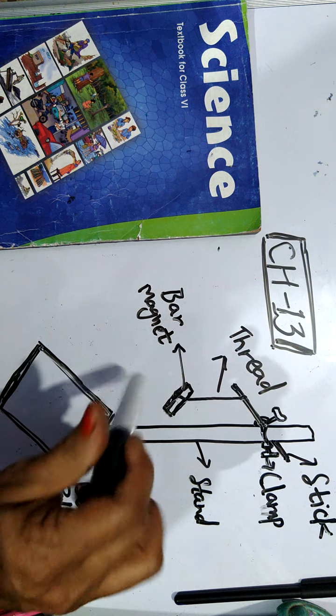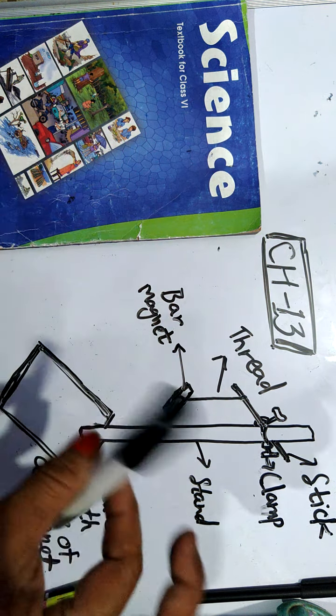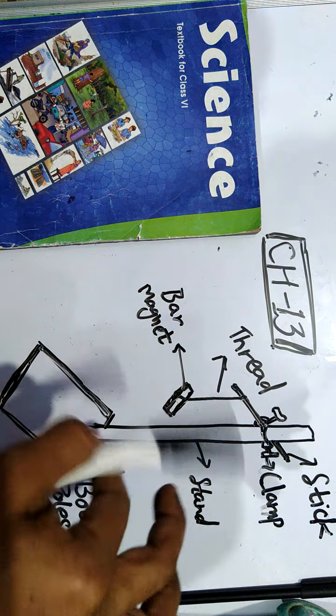Now you just move this bar magnet — just shake it. If you shake the bar magnet it will try to move back and forth. After moving for some time, when you leave it undisturbed, it will come to rest in a definite direction. One end of the magnet will point towards one direction and the other end will point towards the opposite direction. And again and again whenever you move this bar magnet and leave it, it will always come to rest in the same direction.